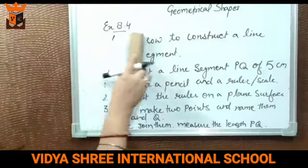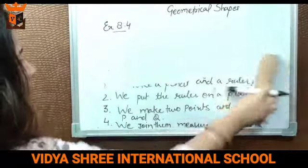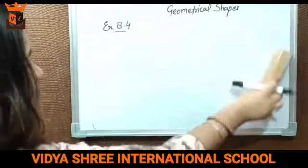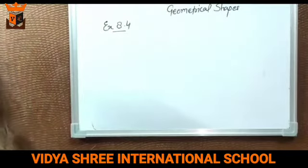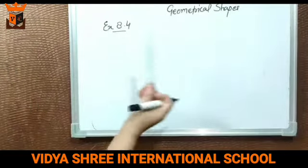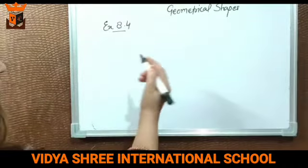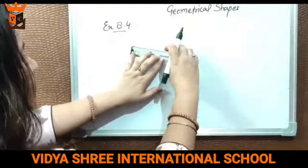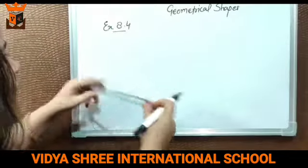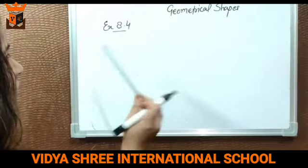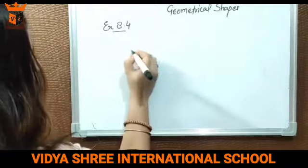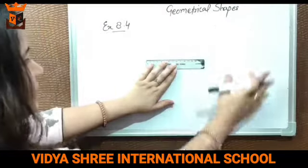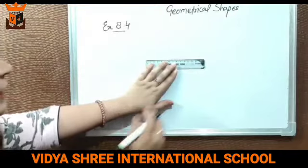Here I am taking this question as a practical. Now I will show you practically what we have to do. This is my ruler and this is my pencil — or a marker on the whiteboard that I am using. So firstly, we need only these two things. Now, we place the scale on a plain surface like this.